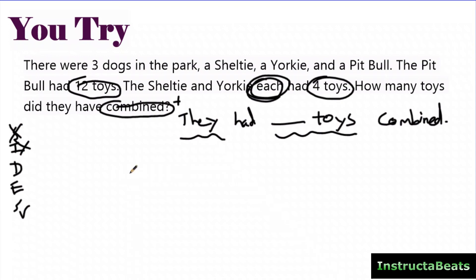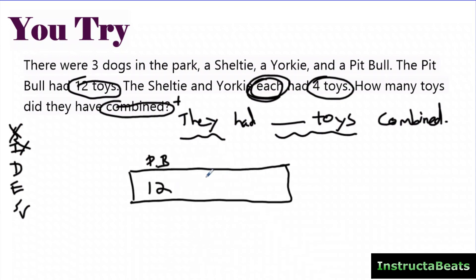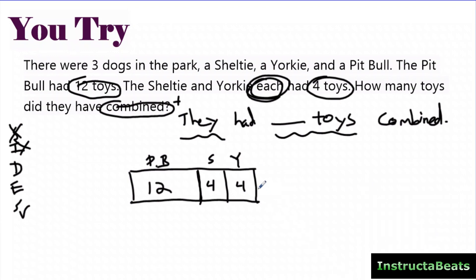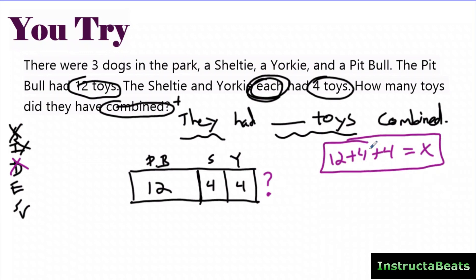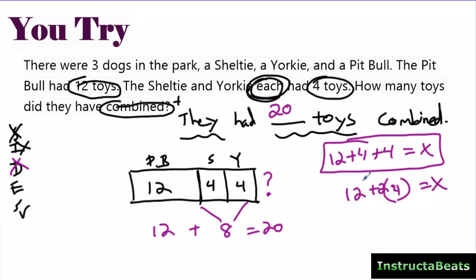I draw my tape diagram. The pitbull had 12, which is the biggest, so I draw the largest section and label it 12. Then the sheltie had 4 and the yorkie had 4 — two separate sections each labeled 4. I see I drew one a little too long, so I erase and fix it. My question mark goes at the bottom for the total. Optionally, write the algebra equation: 12 + 4 + 4 = x. Solving: 12 + 8 = 20. They had 20 toys combined.